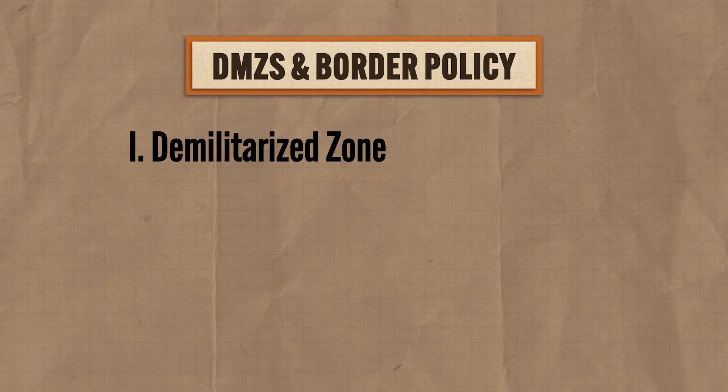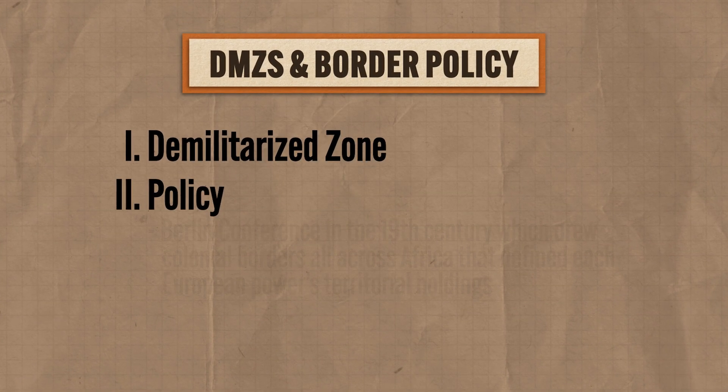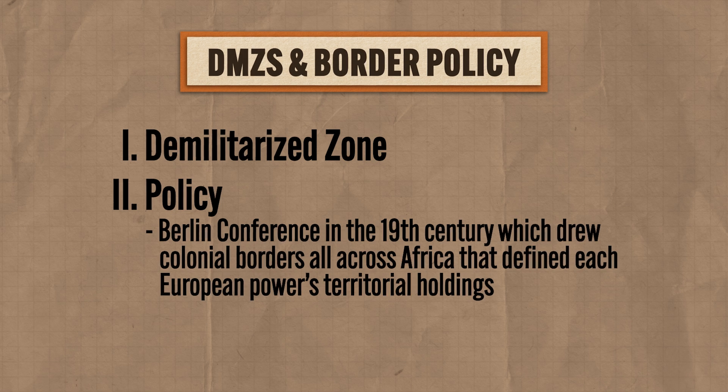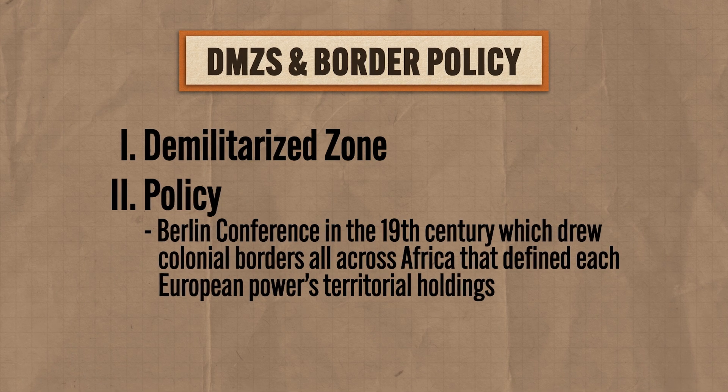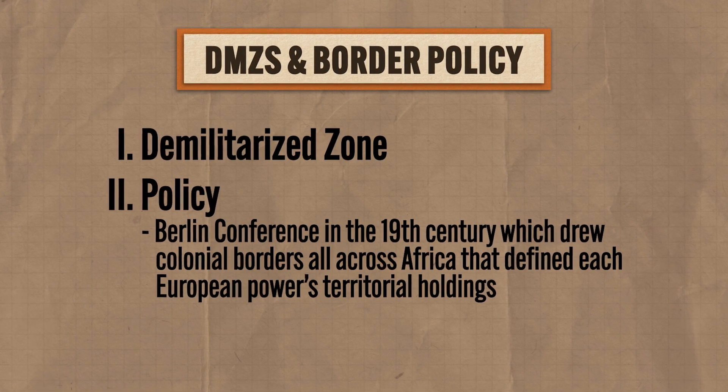Second, at other times boundaries are decided by policy. Here again we return to the Berlin Conference in the 19th century, which drew colonial borders all across Africa that defined each European power's territorial holdings. This agreement was made without a single ounce of input from any African leader, and many of those boundaries remain today and have caused an awful lot of dispute.